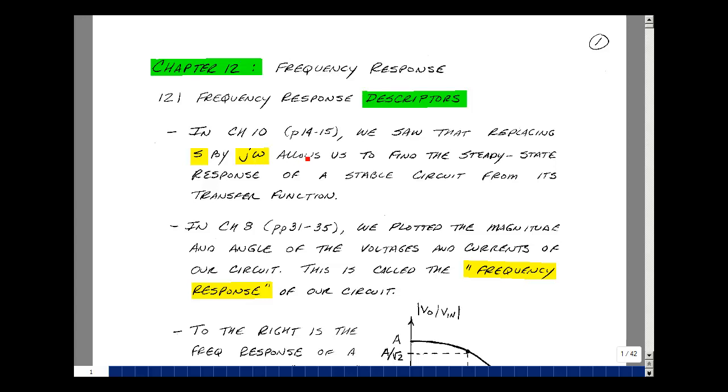In Chapter 10, on pages 14 to 15, we saw that replacing S by J omega allowed us to find the steady state response of a stable circuit, just from its transfer function.